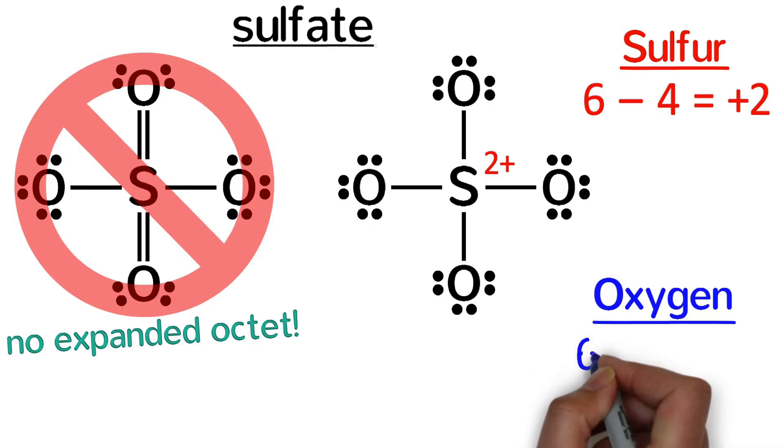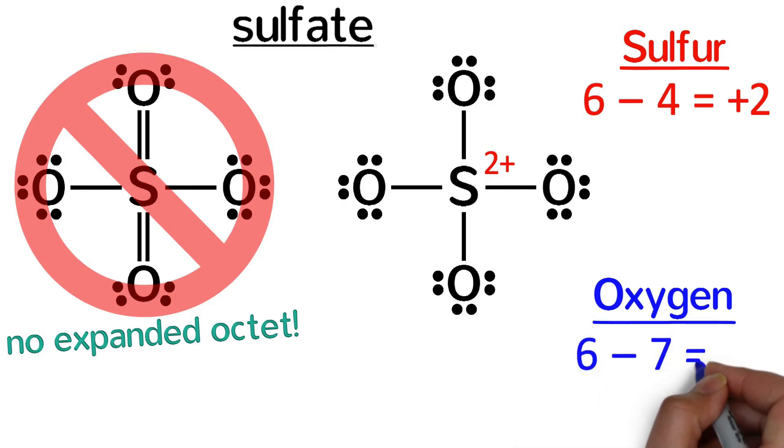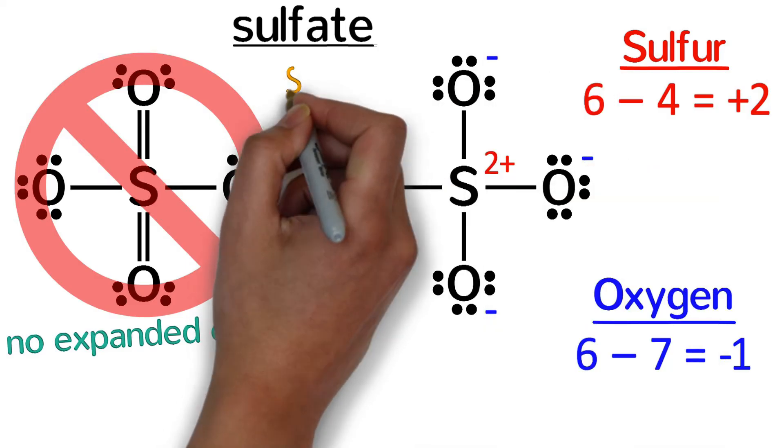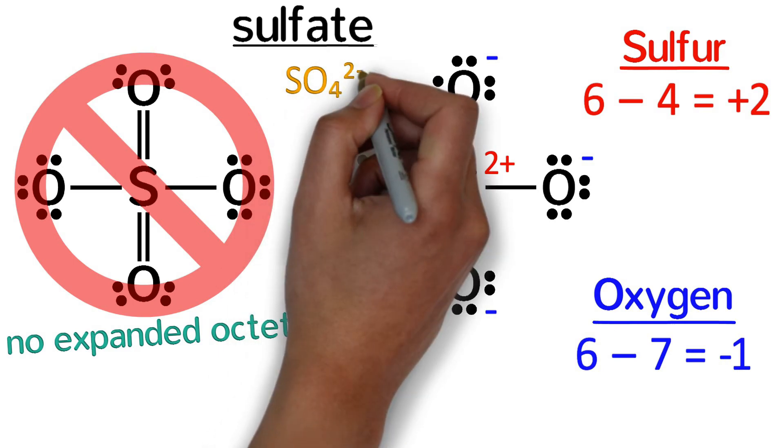Oxygen also has six valence electrons, but in sulfate it has seven, giving it a negative one formal charge. Each of the oxygens in sulfate has a negative one charge, making the total charge of the polyatomic ion negative two.